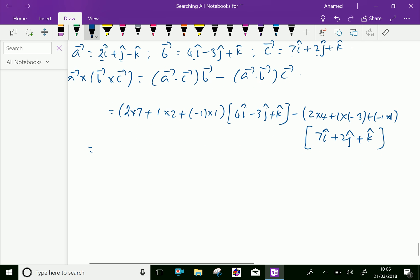Now let us simplify this. 2 times 7 is 14, plus 2 is 16, minus 1 is 15, into 4i minus 3j plus k.